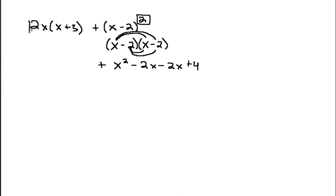So I'm multiplying 2x times the x, which gives me a 2x squared. And I'm going to multiply the 2x times the plus 3, which is a positive 6x.